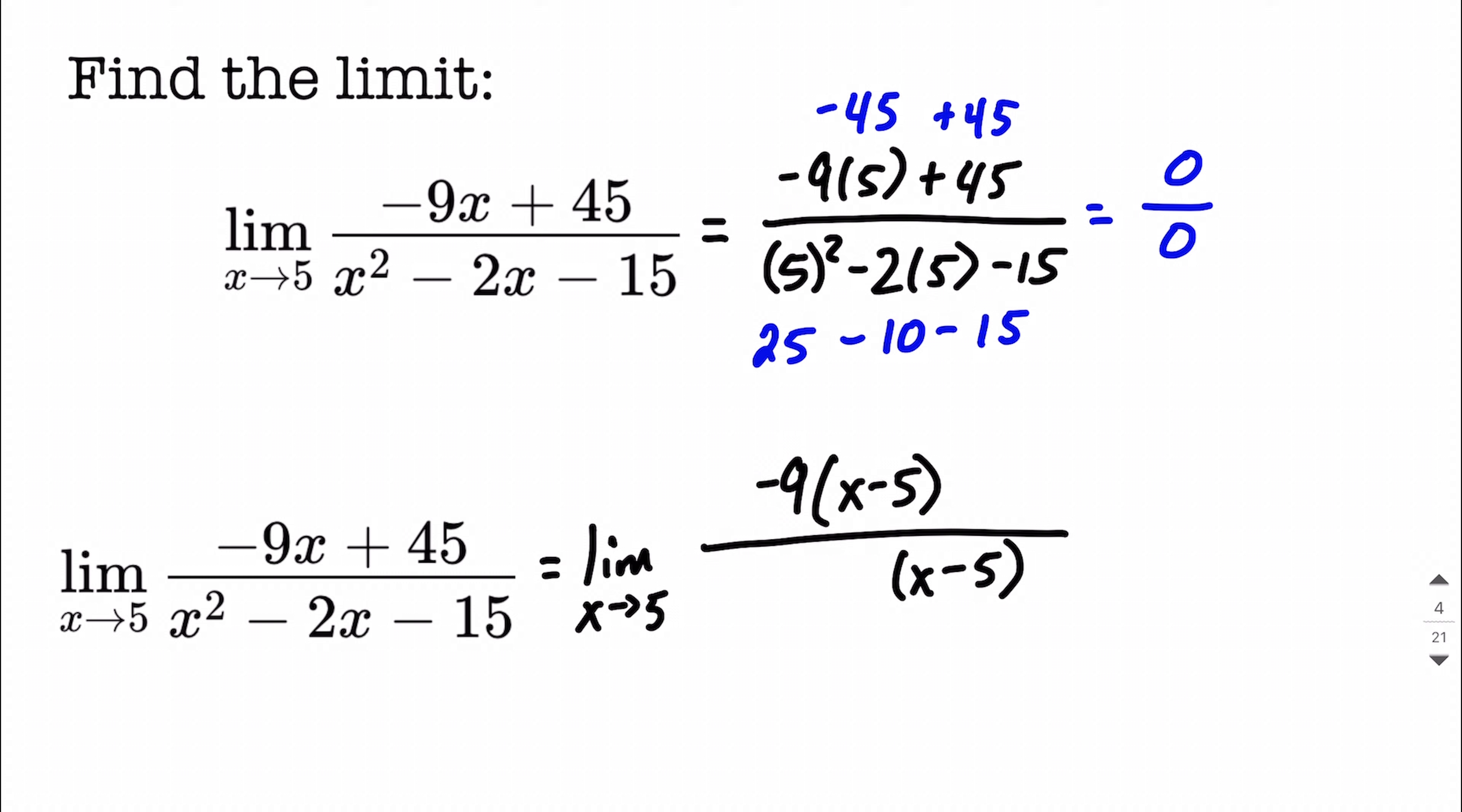And for our denominator, we're going to need a binomial in this case, because we're going to need x multiplied by x to make this x squared. And thinking to ourselves, we need some value that multiplied by negative 5 is going to result in negative 15. In this case, we're going to think positive 3.